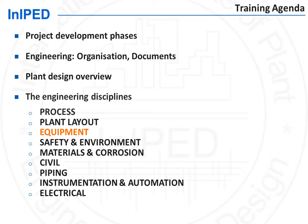In this module, we will review the work and the deliverables of the equipment discipline. The equipment discipline is sometimes called mechanical or machinery. It is in charge of the specification, selection, and technical follow-up of the design and fabrication of all the plant equipment. The discipline is split into specialties, as each type of equipment requires specific knowledge.